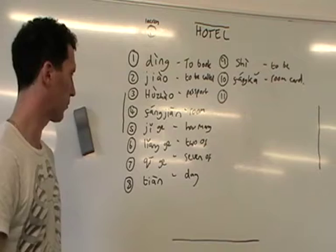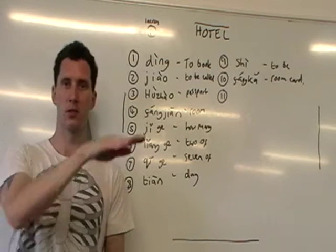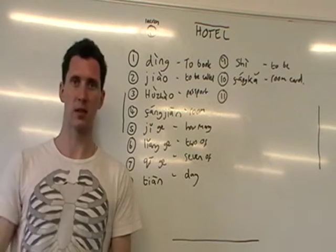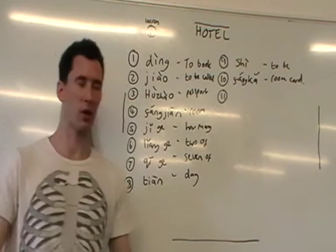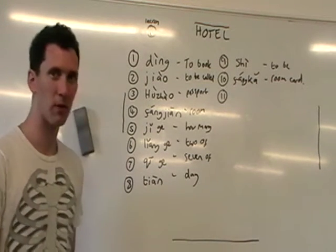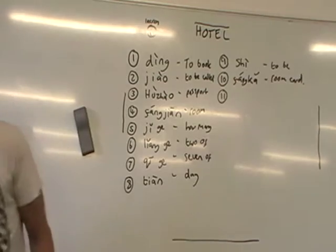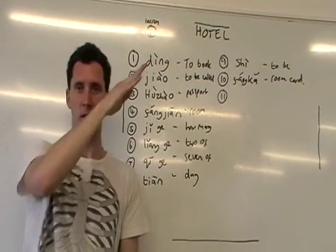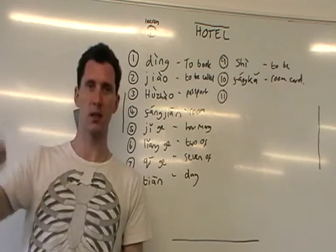Next one: 'seven of.' Seven is qī — qī, qī — and 'seven of' is qīgè, qīgè. So 'I want seven of those' — qīgè. Next word: 'day' — tiān, first tone. So 'seven days' is qītiān — qī for seven, tiān for day. One day is yītiān.